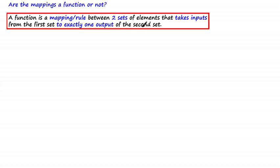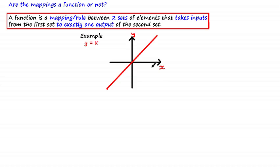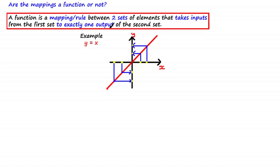Let's use this definition to look at some examples of functions. One of the most basic examples is the equation y = x. When determining whether an equation is a function, it's often helpful to draw its graph to visualize the definition. The equation y = x is indeed a function because for each input — in this case x values — we get exactly one unique output, which are y values. So the one-to-one mapping y = x is also a function.